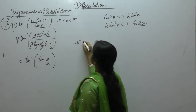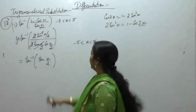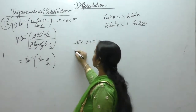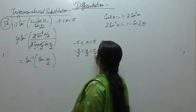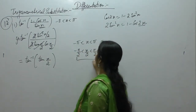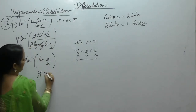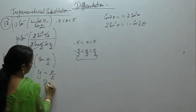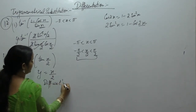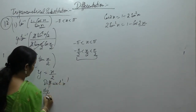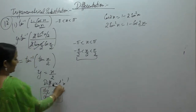The limit is minus π less than x less than π. The angle is x/2, so divide by 2. The limit for tan is minus π/2 to π/2, so y equals x/2. Differentiating with respect to x, dy upon dx equals 1 by 2.